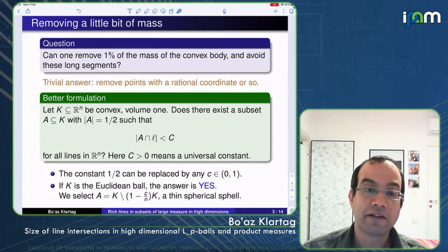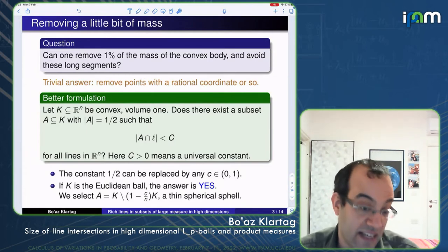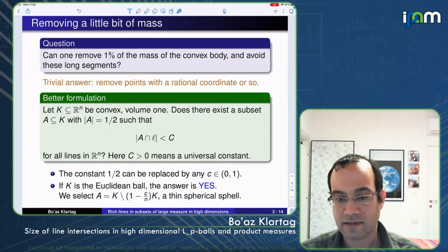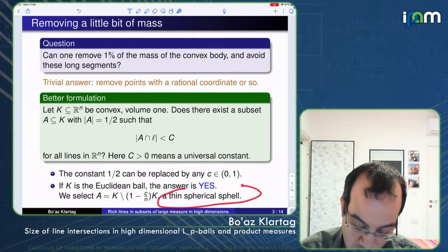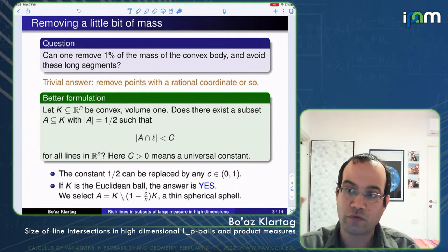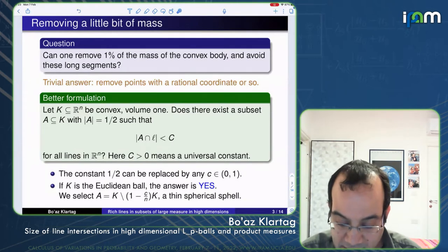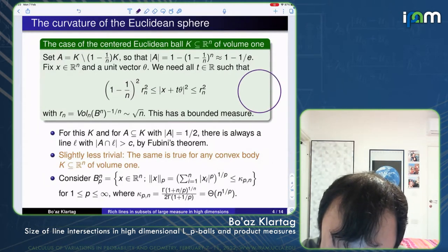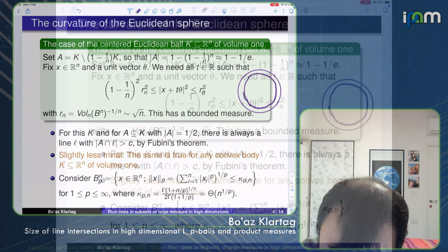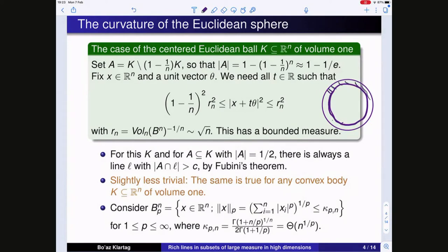The first observation is that if K is the Euclidean ball of volume one, the answer is yes. We can remove the interior of the ball and take A to be a thin spherical shell whose width is just 1/n times its radius. Since I took radius (1 - 1/n), I get a quantity which is roughly a universal constant in volume.